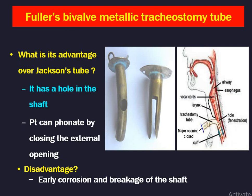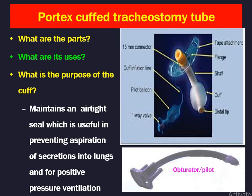Next is Fuller's bivalve metallic tracheostomy tube. See the speaking hole here in the shaft — this is the bivalve metallic tracheostomy tube with two blades. The advantage over Jackson's tube is it has a hole in the shaft which can be used as a phonatory tube — the person can phonate by closing the external opening and speaking through it. The disadvantage is early corrosion and breakage of the shaft because the shaft bulbs are thin. Next is the Portex cuffed tracheostomy tube.